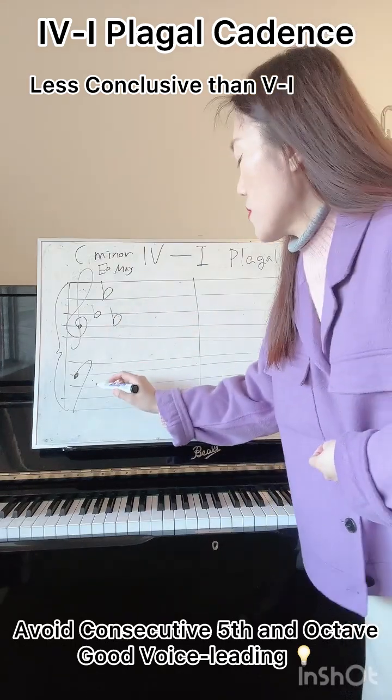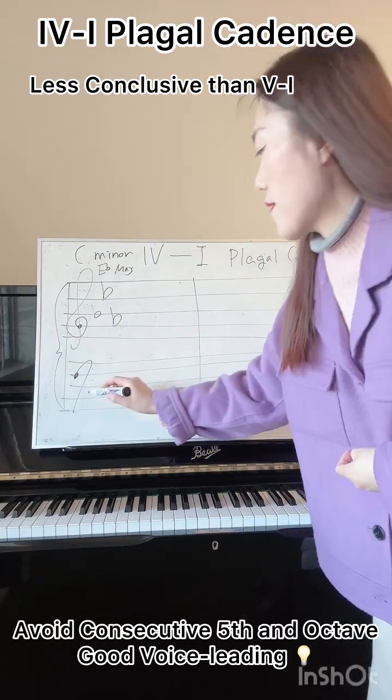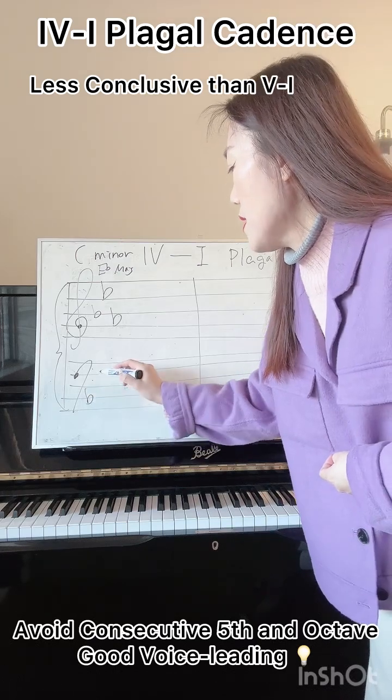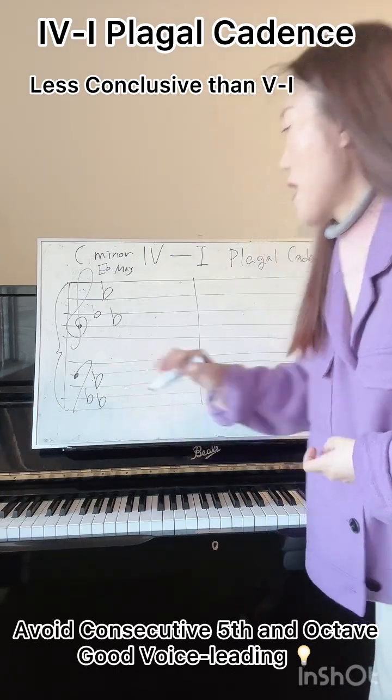Now we draw the key signature for the lower staff: B-flat, E-flat, and A-flat.